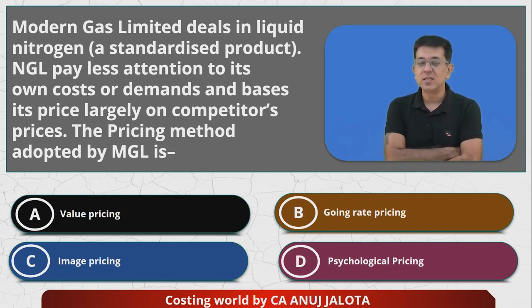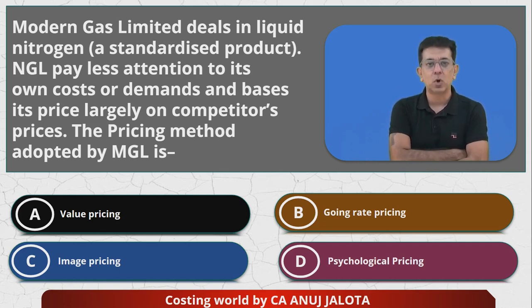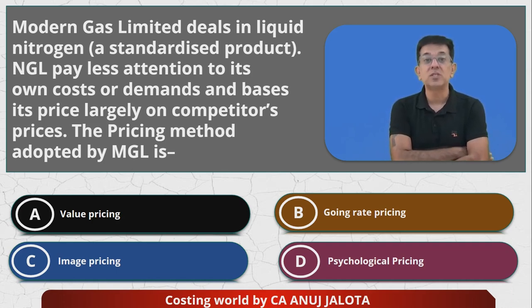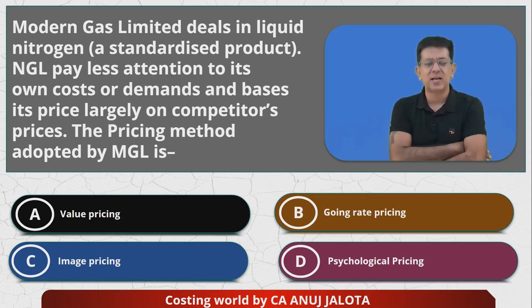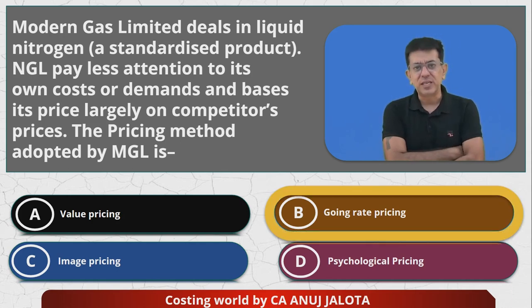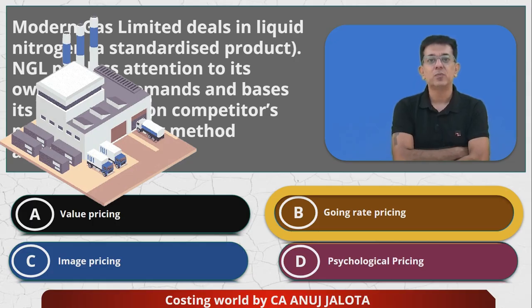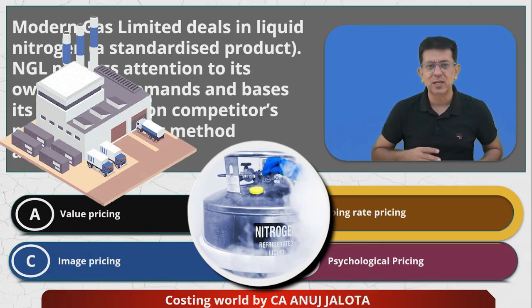The answer is B — going rate pricing. This company does not decide its own pricing; it looks at competitors' prices and sets its price accordingly, ignoring its own cost. Going rate pricing is typically used where competition is very high and there is no differentiation in the product.